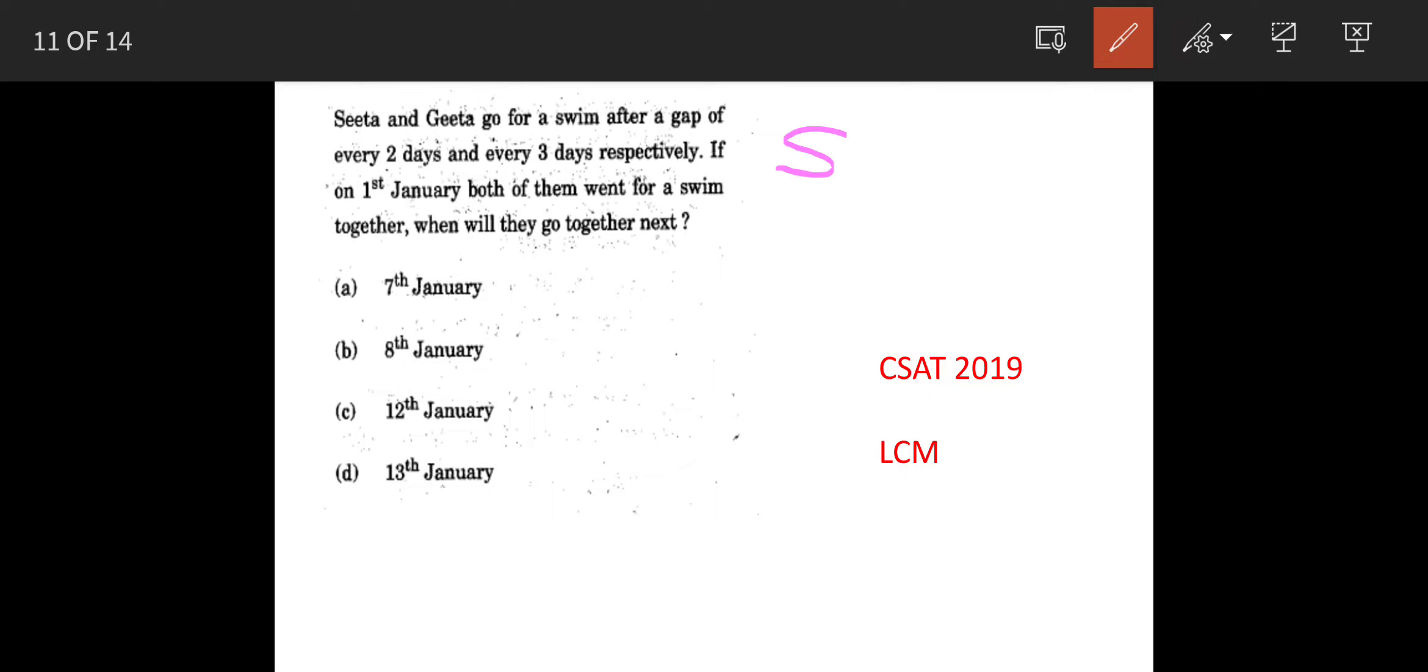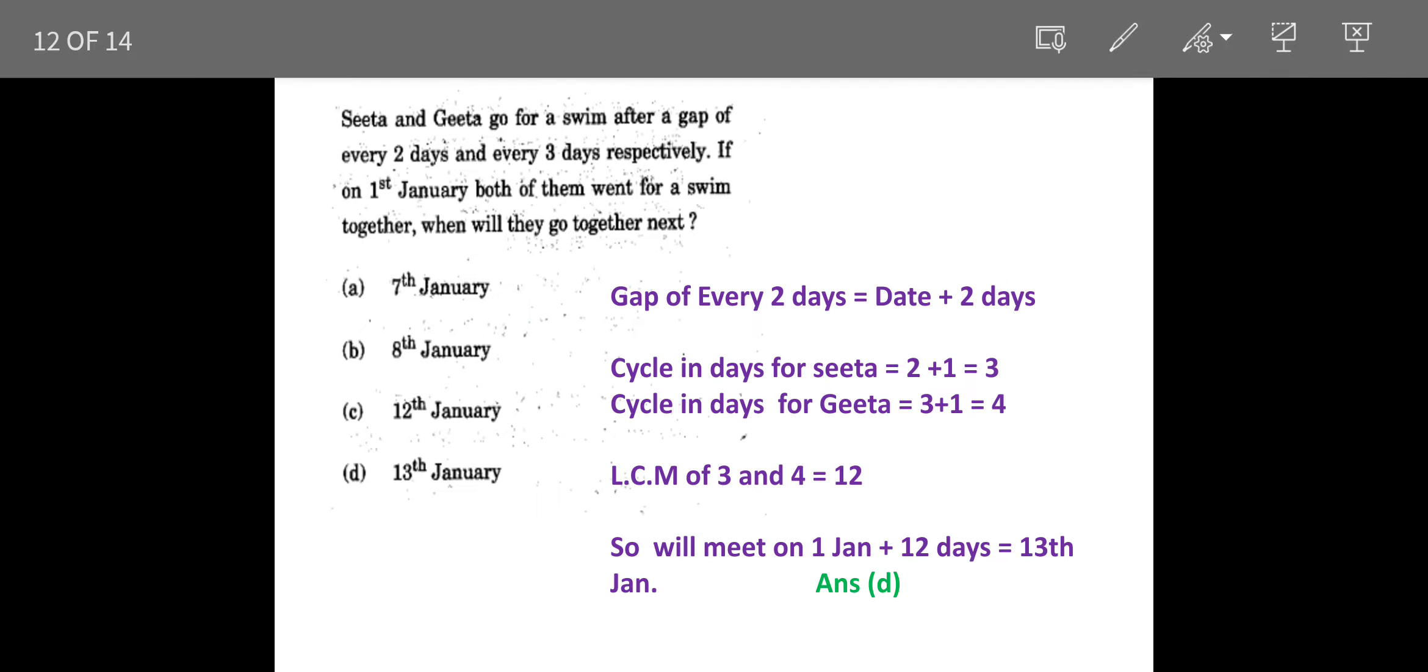The question is: there are two girls, Sita and Gita. Sita goes for swimming after every two days, and Gita goes for swimming after every three days. On first January, they both went for swimming together. When are they going to swim together again? These are the options, so we'll see the solution.